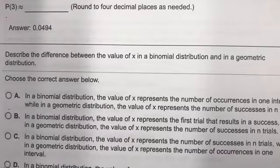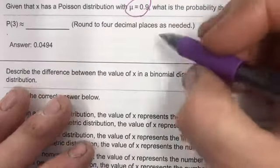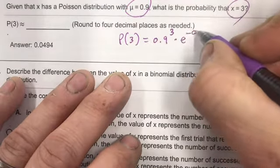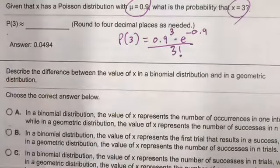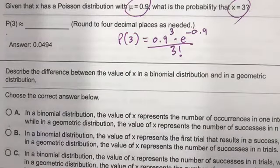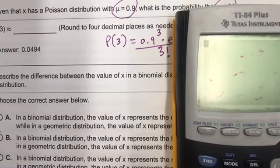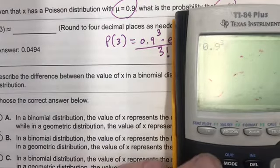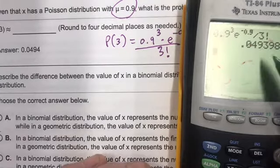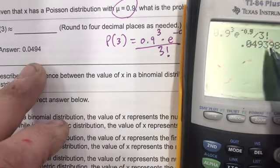Another Poisson problem: μ = 0.9, find P(x = 3). P(3) = (0.9^3 · e^(−0.9)) / 3!. Typing it in: 0.9^3 × e^(−0.9) ÷ 3! ≈ 0.0494. If you don't have the formula memorized, just write down your notes and plug the numbers in where they go.